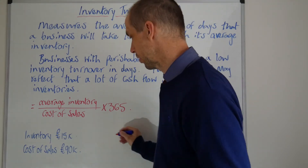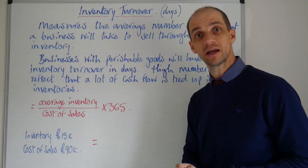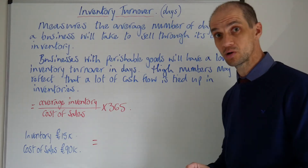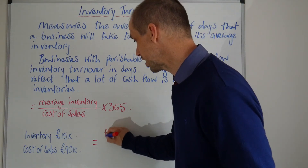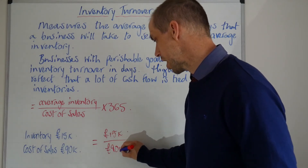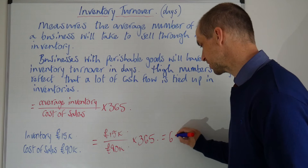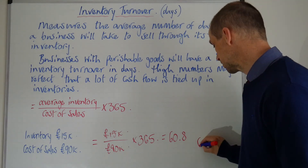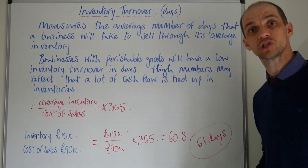Let's work through the example we've got here. We have an inventory level of £15,000 from the statement of financial position, and £90,000 as the annualized cost of sales from the statement of comprehensive income. So we input £15,000 divided by £90,000, then multiply by 365, which comes out at about 60.8 days — you could round that up to 61 days. So it takes that business 61 days to sell through their average stock holding.